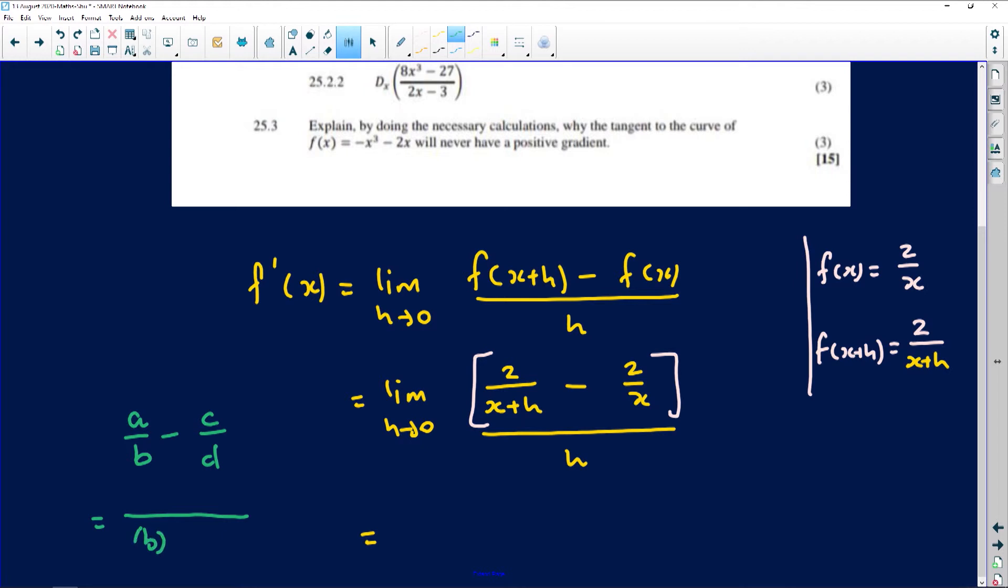Remember, if you've got a over b minus c over d, and you need to actually do the subtraction because these are fractions, just draw a division line, keep the denominators as denominators. So the denominators b and d, keep them as denominators, and then just multiply a and d, you'll get ad minus multiply b and c, you're going to get bc.